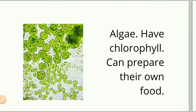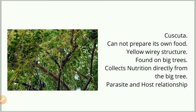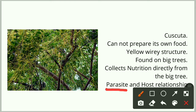Here is another interesting thing — you can see wire-like yellow colored strings or vines. These are called Cuscuta. They cannot prepare their own food; they are yellow in color and don't have leaves. So how do they survive? They climb on big trees, which have a lot of food in their body, and absorb food from the big tree. Because they eat from somebody else, they are called parasites, and the tree that gives them food is called the host.